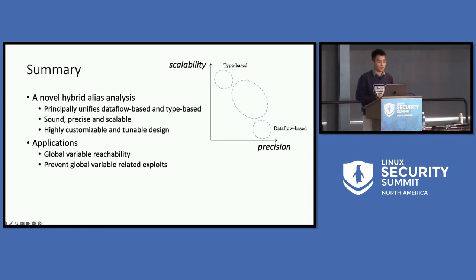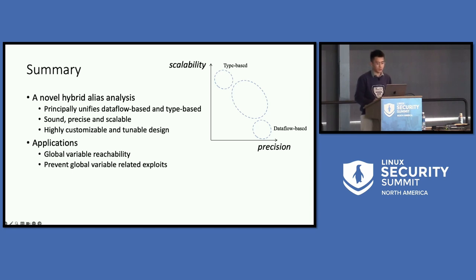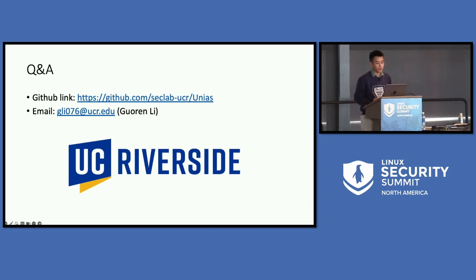To summarize, in this work we propose a novel alias analysis framework that principally unifies the dataflow-based and type-based methods. It is sound by design, can adjust precision and scalability, and can be applied to different variables and tasks on demand. We apply UniS to analyze the use of global variables and can prevent all global variable-related exploits in the recent six years with suitable access control mechanisms. UniS finds the right solution in the solution space. Thanks everyone for your time.